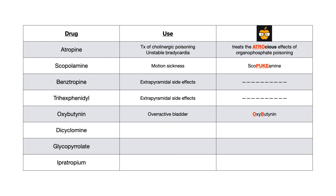Oxybutynin is classically used to treat overactive bladder. My mnemonic: look at the O and B in oxybutynin — OB stands for overactive bladder. Dicyclomine is used primarily in irritable bowel syndrome. My mnemonic: 'di' for diarrhea and 'cyclo' for cyclical — dicyclomine treats the cyclical diarrhea of IBS by blocking M3 receptors in the GI tract, slowing peristalsis.